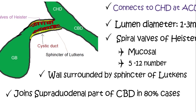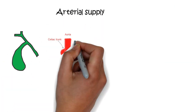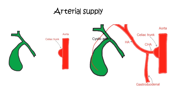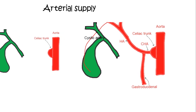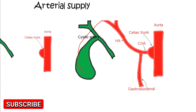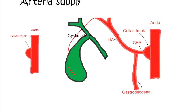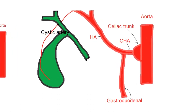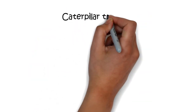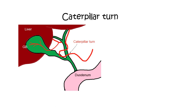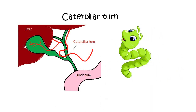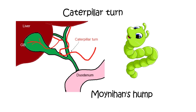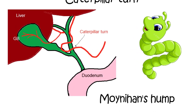Blood supply of the gallbladder: the arterial supply starts from the celiac trunk, which gives rise to the common hepatic artery, which gives rise to the right hepatic artery, which in turn gives rise to the cystic artery. In 85% of cases, the cystic artery arises behind the common hepatic duct, whereas in 15% it crosses in front of the common hepatic duct or cystic duct. There can also be an accessory cystic artery arising directly from the gastroduodenal artery. The most dangerous anomaly is the caterpillar turn or Moynihan's hump, where the hepatic artery takes a tortuous course in front of the origin of the cystic duct, or the right hepatic artery is tortuous and the cystic artery short — causing difficulty in cholecystectomy due to profuse bleeding, potentially converting laparoscopic to open cholecystectomy.